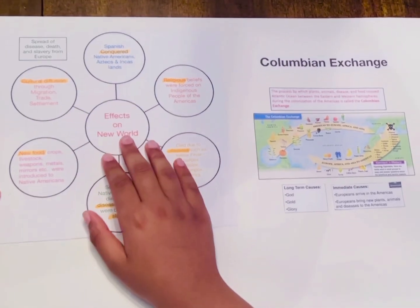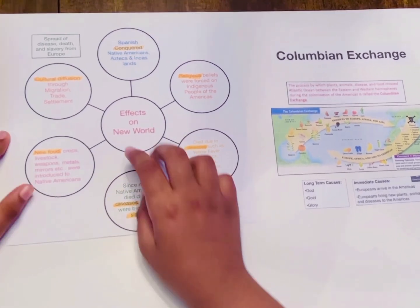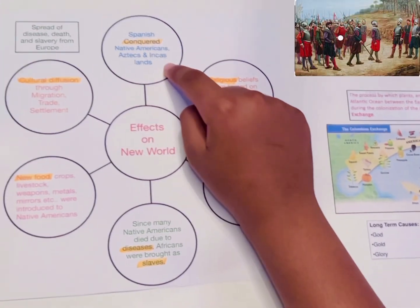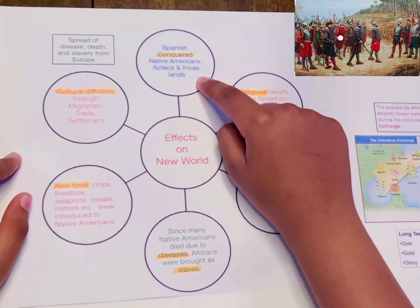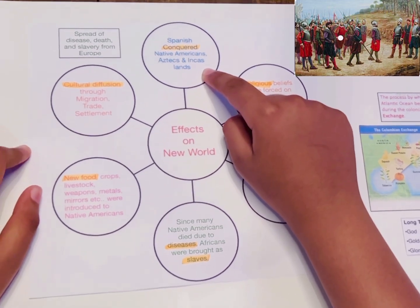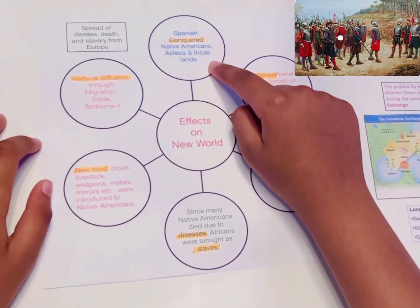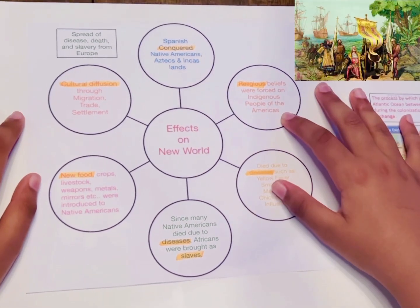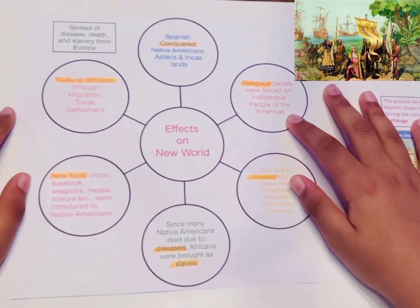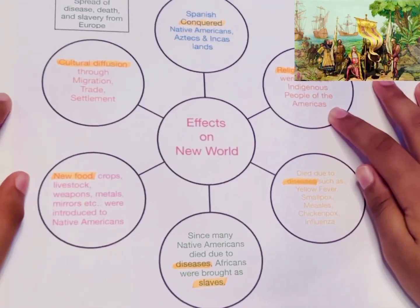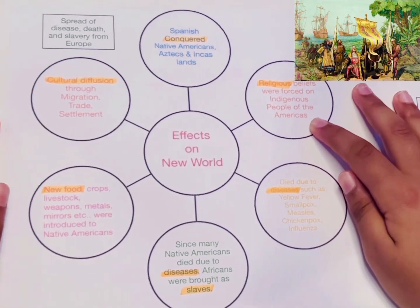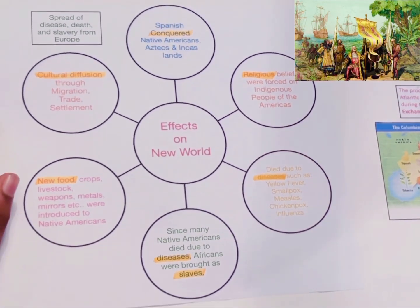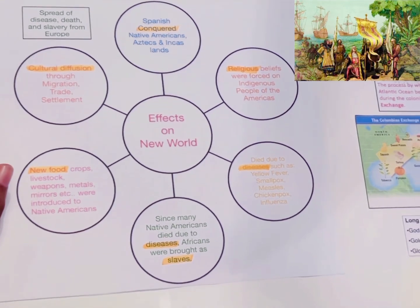Let's first see the effects on the new world. The Spanish conquered Native Americans, Aztecs, and Inca lands. The reason was to get lots of land and try to find gold. There were also religious beliefs that forced indigenous people of the Americas to convert to Christianity — like I said in the long-term causes, it was for God.